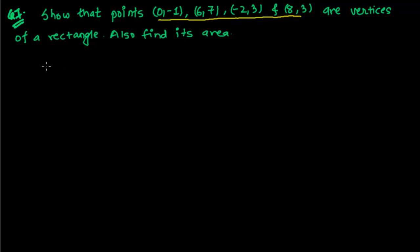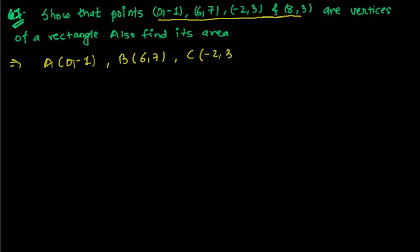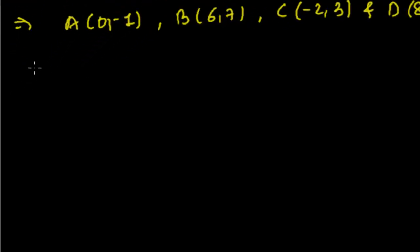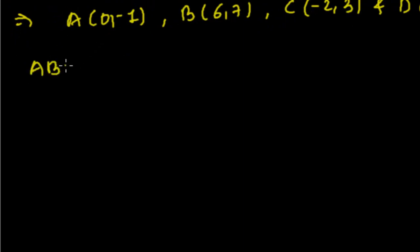Let me suppose: A = (0, -1), B = (6, 7), C = (-2, 3), and D = (8, 3). Now, what are the possible lines? It may be AB, BC, CD — or AC, BD. Let me write all the lines and find their distances using the distance formula.